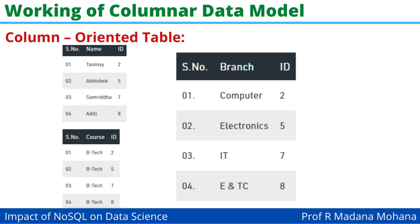Coming to the column-oriented table, here you can see the first table has serial number, name, and ID; the second table has serial number, course ID; and the third table has serial number and branch ID. All columns are given separately, each column is identified by a unique ID. So these are all column-wise separated, and you can read according to column — these are all column-oriented tables.